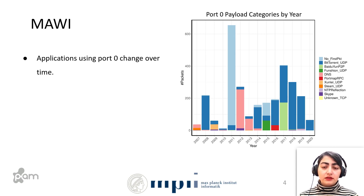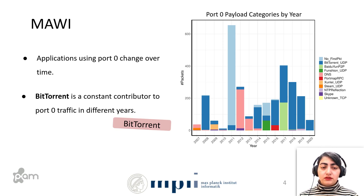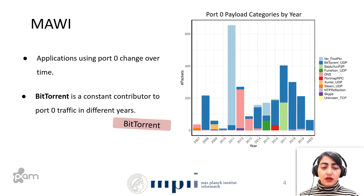Taking a second look at the plot, the dark blue line showing BitTorrent actually contributes across multiple years. So BitTorrent is a constant contributor to port 0 traffic in different years in this dataset. We also noted that packets without any payload make up a high fraction of port 0 traffic, though they are not shown in this plot. We wanted to investigate further by looking at other packet headers.